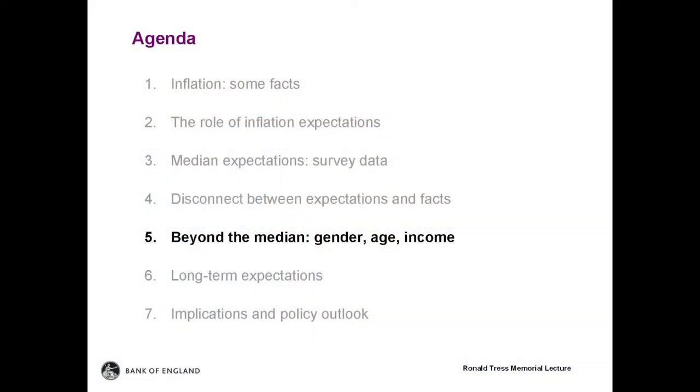To sum up, there are a number of reasons why households' perceptions and expectations of price changes may differ from measured CPI data. It could be that households are referring to a different basket, a different price index, or a subset of more visible goods. People may rationally opt not to process all the information required to form accurate expectations because the benefits do not justify the cost. Or it could be that different levels of financial literacy affect households' understanding of inflation. I will next explore these possibilities by looking at more disaggregated data.